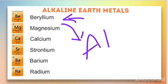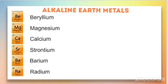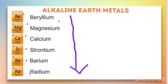We will be discussing the general properties and the physical properties of these elements. It is necessary to remember the sequence from top to bottom: beryllium, magnesium, calcium, strontium, barium, radium. It is also important to learn the symbols as well as the names of these elements.